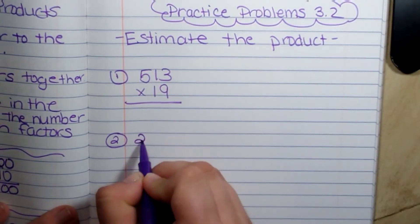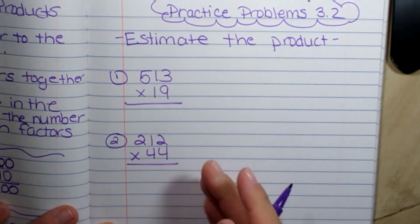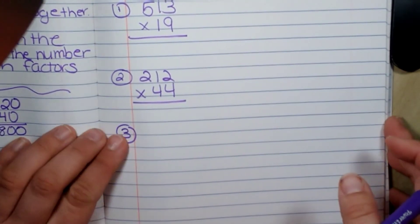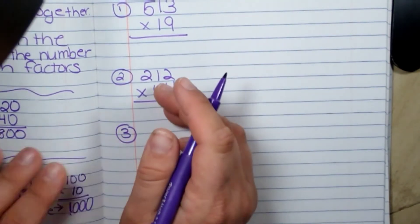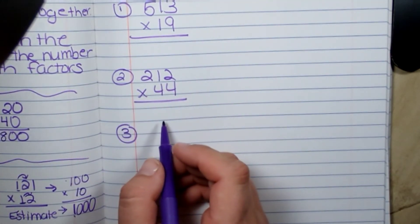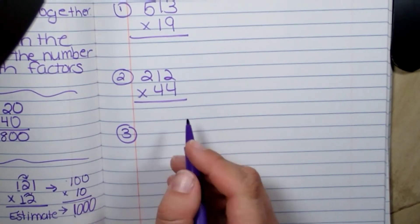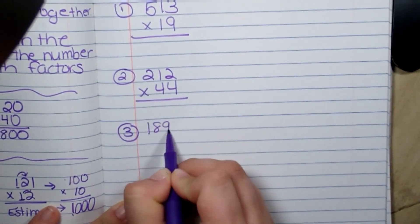Two hundred and twelve times forty-four. For number three, we're going to do one hundred and eighty-nine times forty-six.